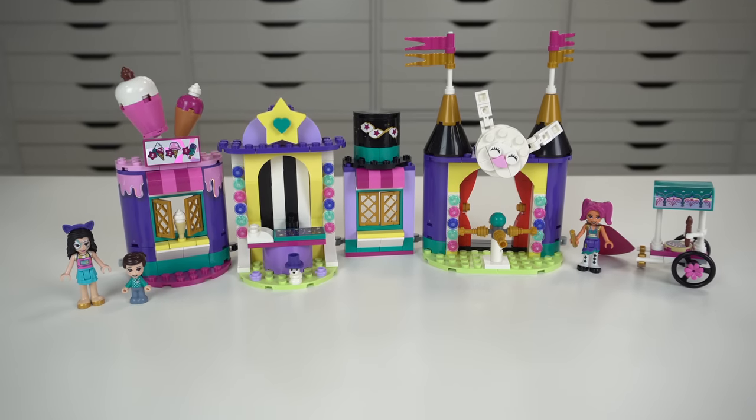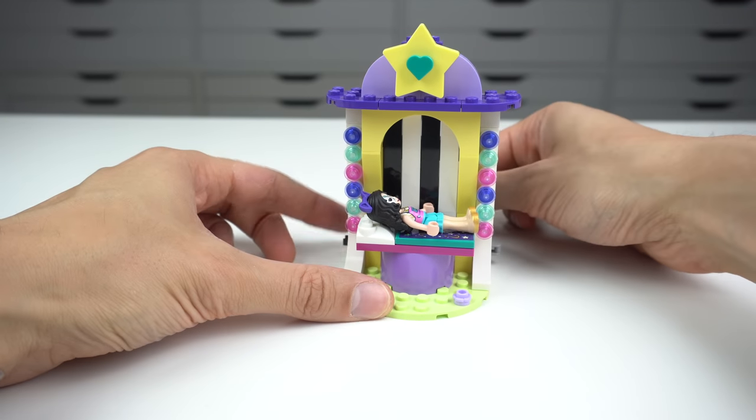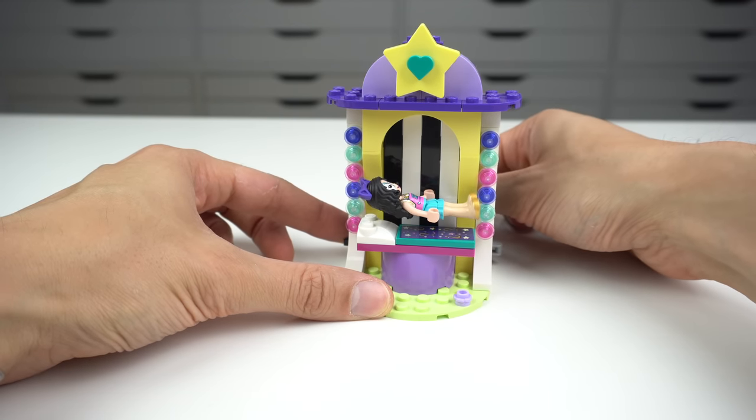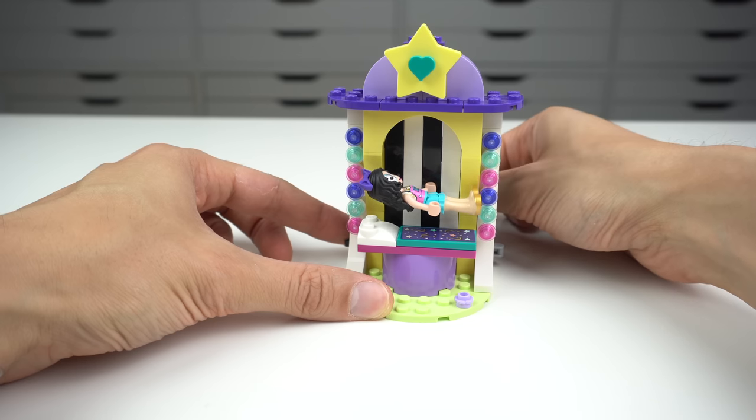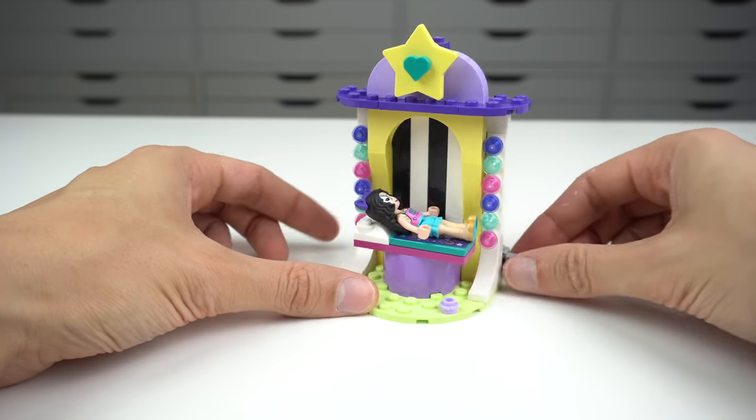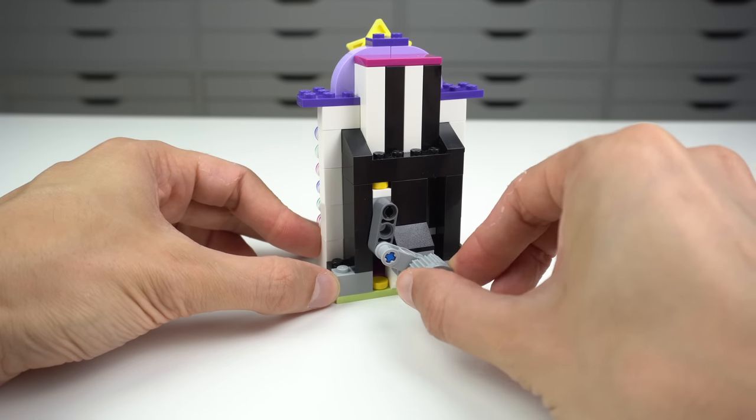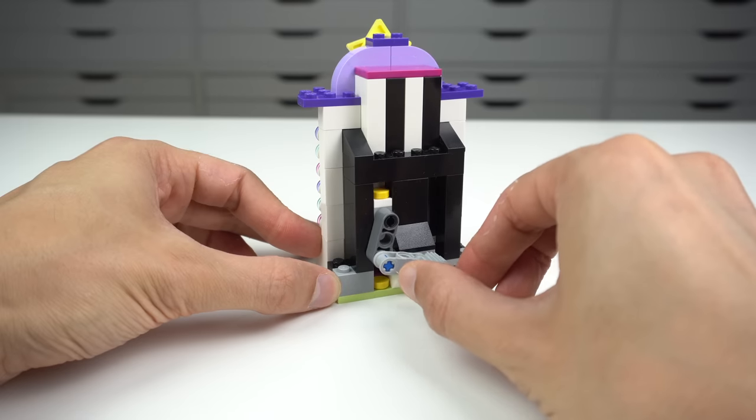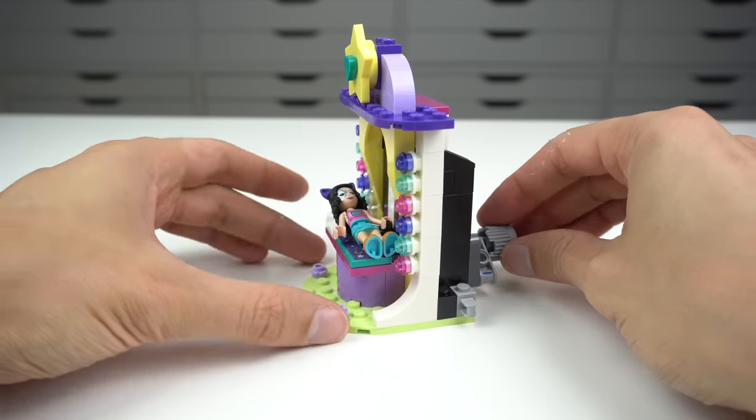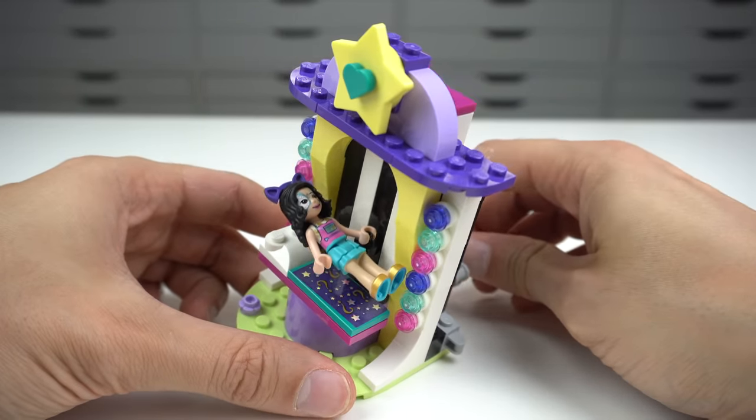Now we're taking a look at the Magical Funfair Stalls. This build is pretty perfect. Magic! This is just genius! Well done from Friends LEGO designers. Look at this - such a simple mechanism and yet the effect looks so good. The mini doll is held in place by the hand. I mean wow! I would love to know who the designer for this one was. Really good job.